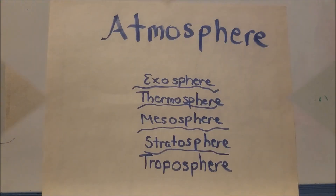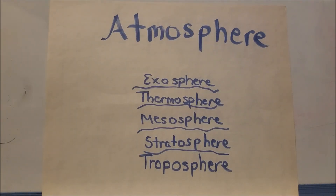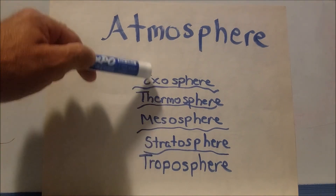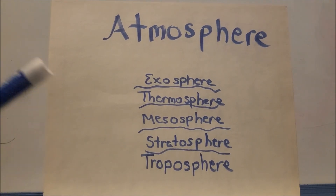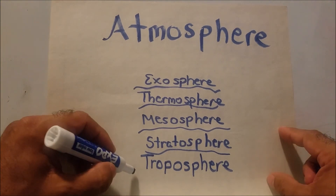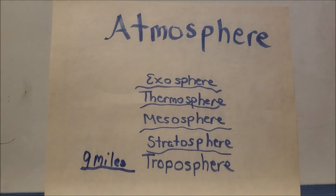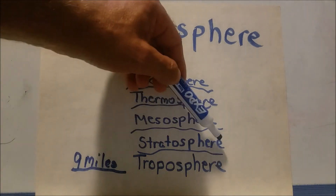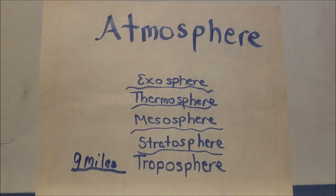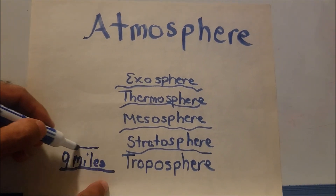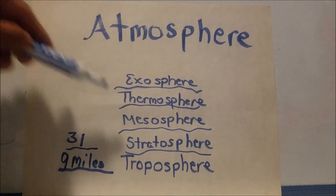The atmosphere is another part of the geosphere and has different sub-spheres. We live in the troposphere, which goes about nine miles up into the sky. Then we get into the stratosphere — that's where commercial planes are, above the clouds. The stratosphere goes from about nine miles up to about 31 miles. Then we have the mesosphere, thermosphere, and exosphere.